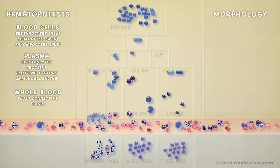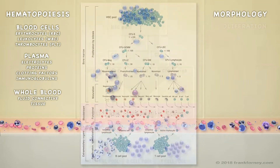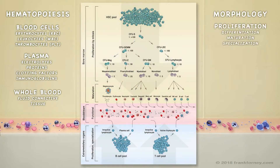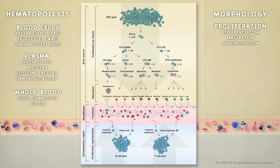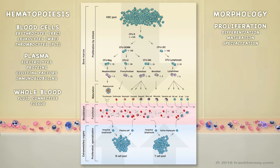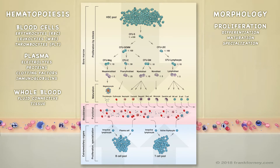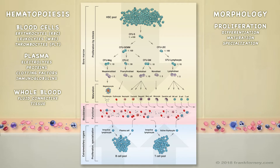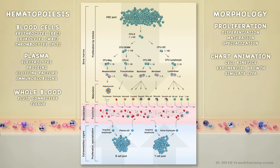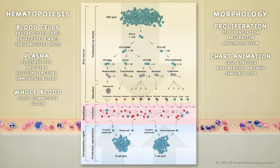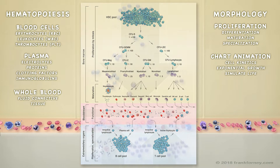Hematopoiesis is often presented as a static diagram, where cell growth and differentiation is illustrated in a genealogical fashion. Chart animation visually demonstrates cell interaction and rapid regeneration.